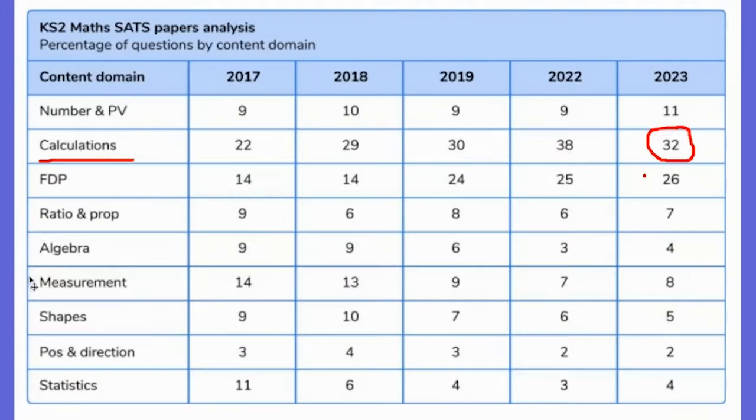So first of all, again back to this table, multiplication questions fall into the calculations category and you can see on the 2023 paper, 32 marks went towards calculations questions that would involve addition, subtraction, multiplication and division. So there is going to be a couple of questions on multiplication, long multiplication specifically.